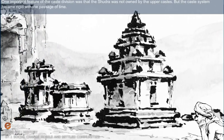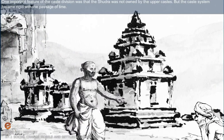In the early Vedic period, with increasing emphasis on ritual and sacrifices, the Kshatriyas were the warriors and ruling class. The Vaishyas were originally cultivators, but in the later Vedic period many of them shifted their occupation to trade and crafts. One important feature of the caste division was that the Shudra was not owned by the upper castes, but the caste system became rigid with the passage of time.